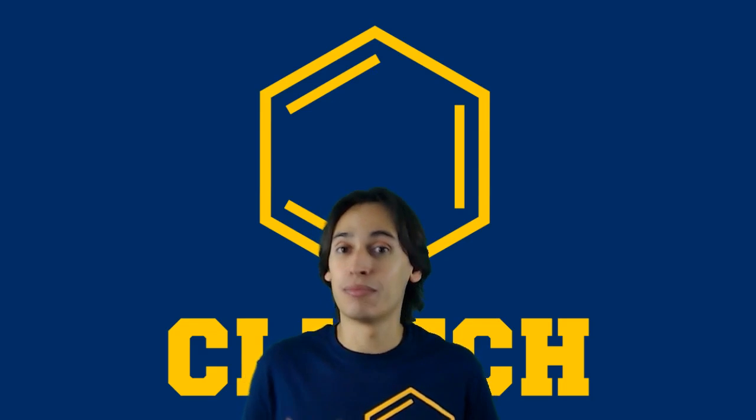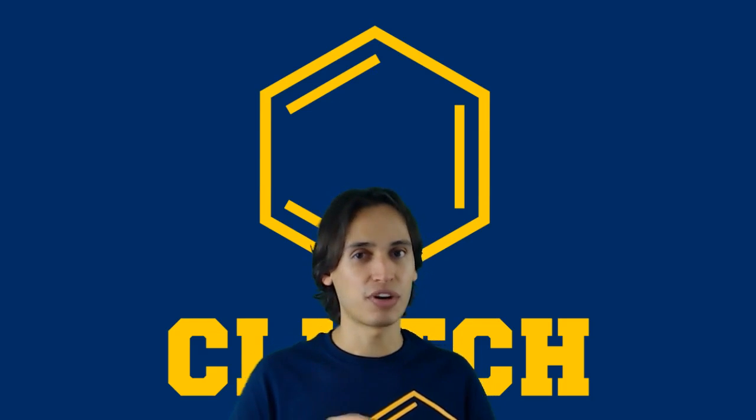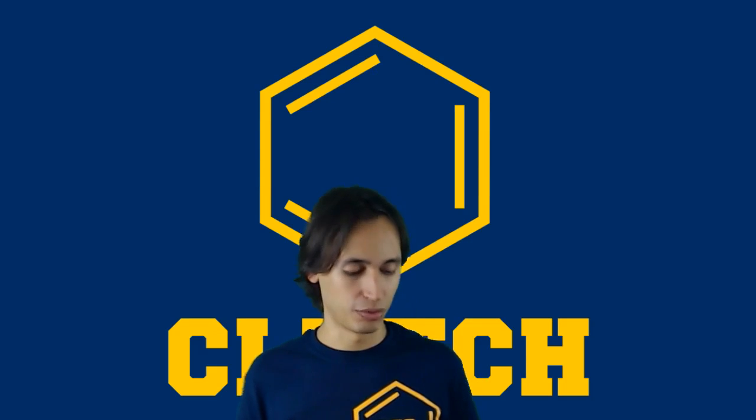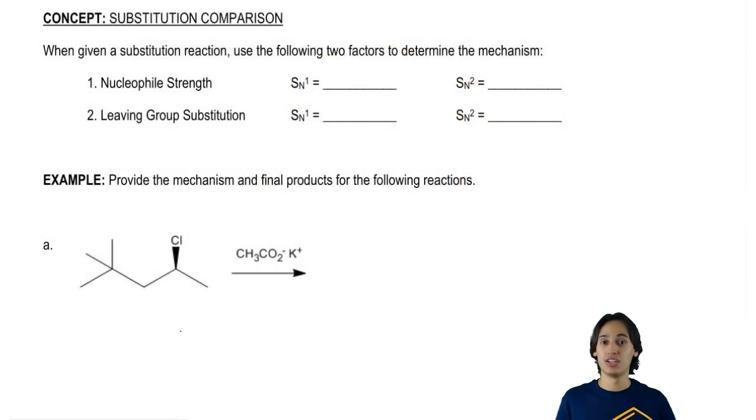Just as a heads up, this is actually going to get more complicated later on once you start talking about elimination. But for right now, since we're just in substitution, we can simplify it down to just two variables. And you're probably going to guess what they are. Let's go ahead and get started. It's just going to be we're going to look at nucleophile strength and we're going to look at leaving group substitution. This has to do with the things that I keep saying are different between SN2 and SN1.